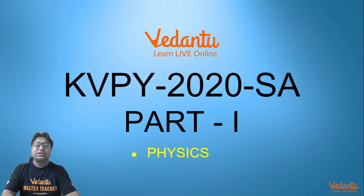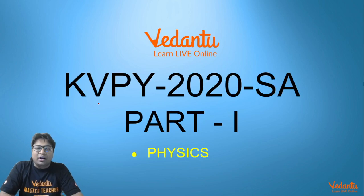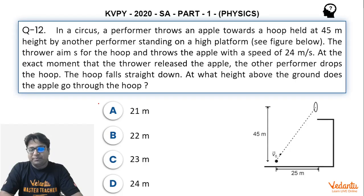Hello students, we are discussing KVPY 2020 SA physics section part 1 and we are now looking at the 12th question of physics section, which becomes question number 27 of the paper. This question is based on projectile motion.